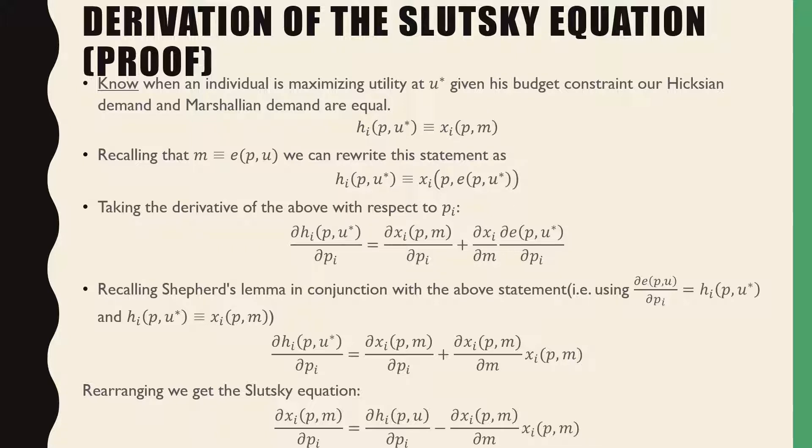Recalling Shepard's Lemma in conjunction with the above statement, Shepard's Lemma in the lens of consumer theory says that our partial derivative of our expenditure function with respect to the price of a given good gives the Hicksian demand for that good. And the equality above that we're going to be talking about is our Hicksian demand of good I is equivalent to the Marshallian demand for good I. We get the below nice little derivation over there.